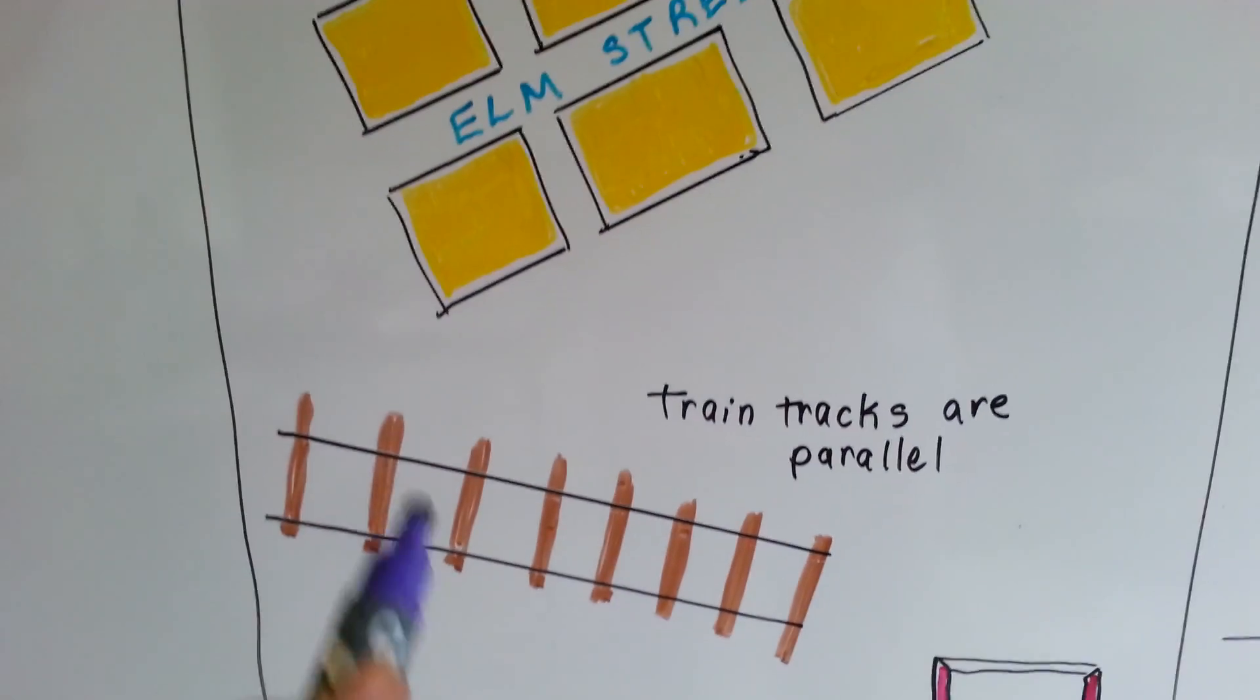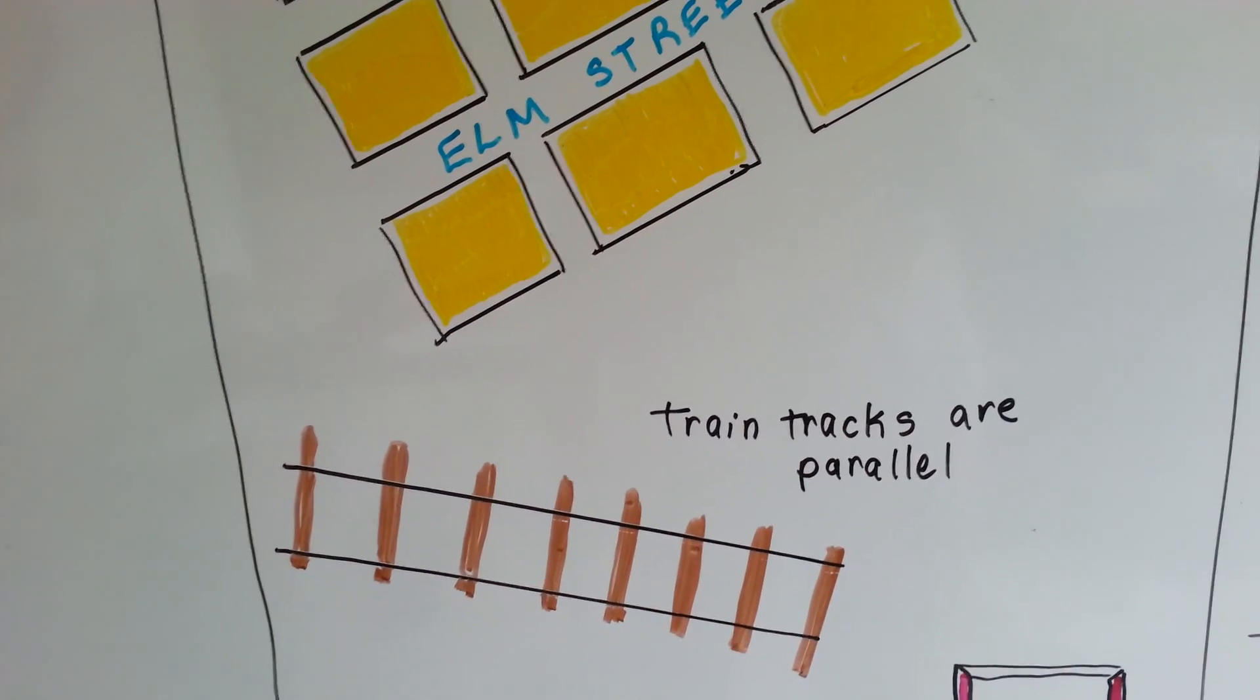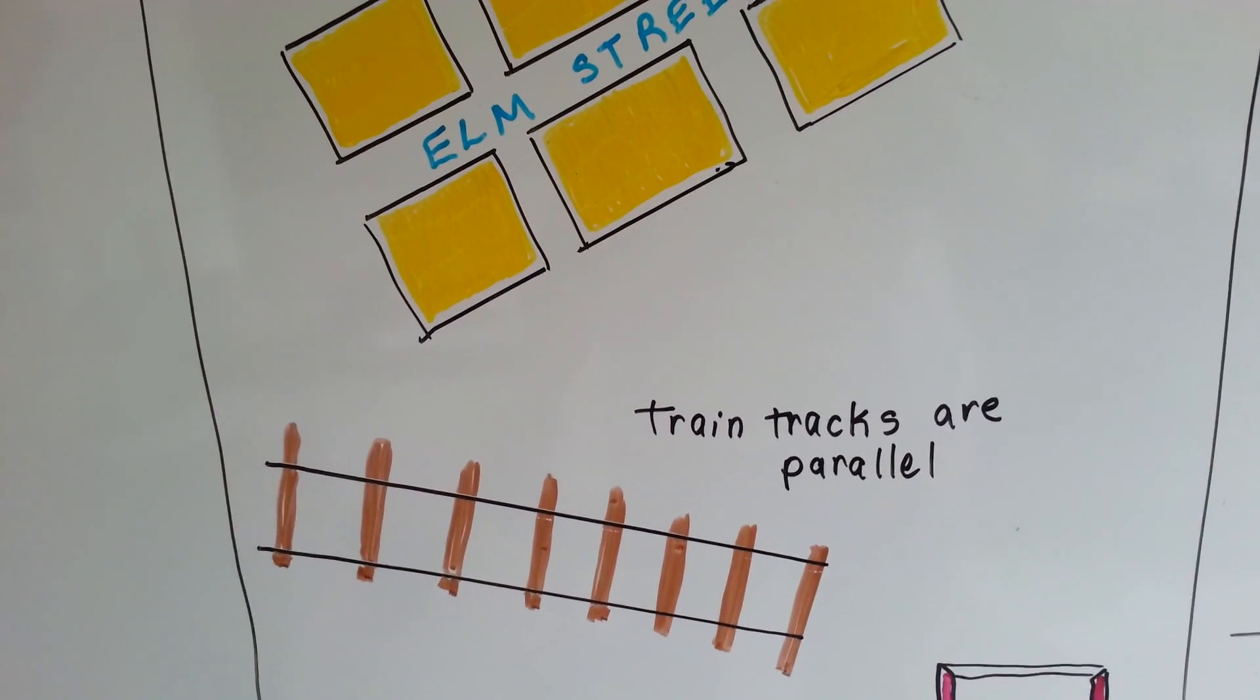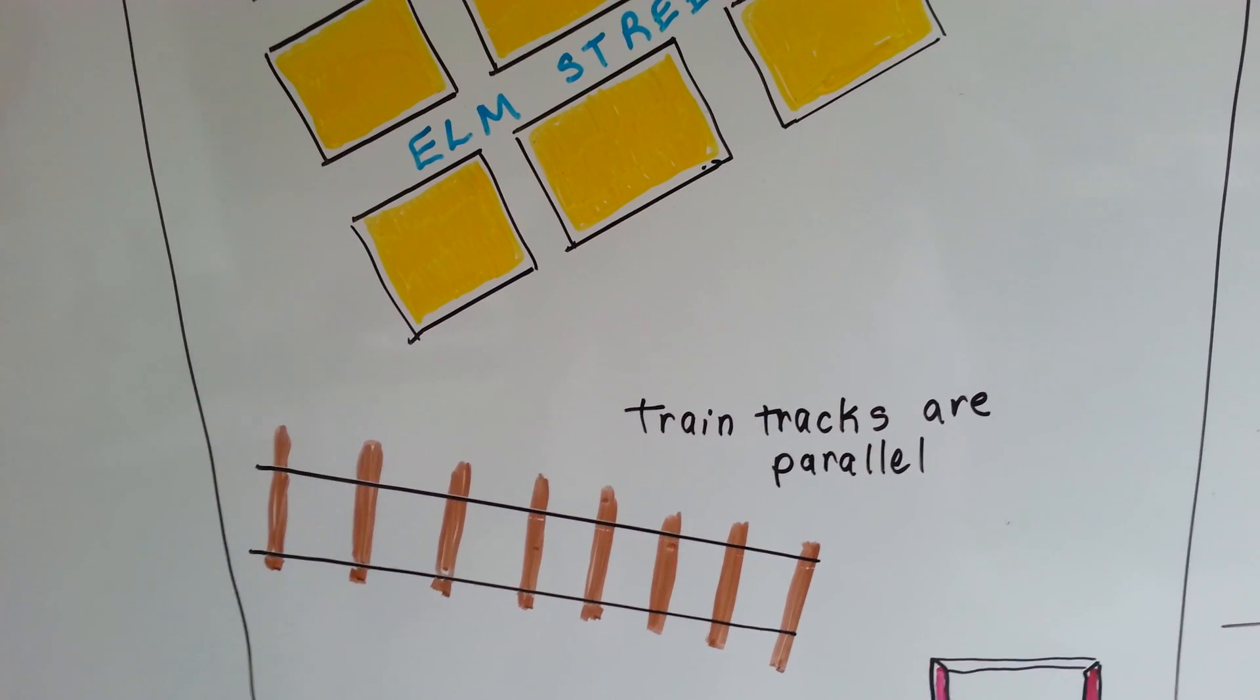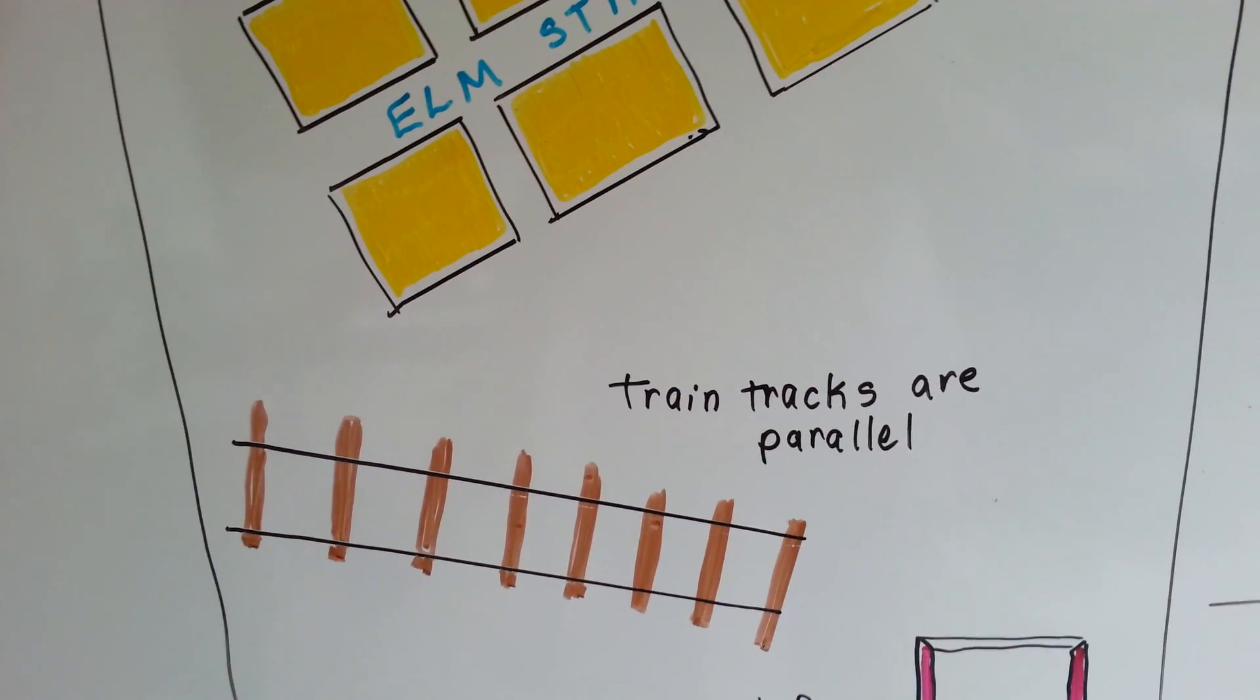Train tracks are parallel. They continue on and on, side by side, never touching. They can't because the wheels of the train are a certain distance apart, and the tracks have to stay that way, don't they?